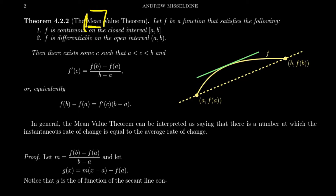That's how you should interpret this, because the mean value theorem is going to make a connection between the average rate of change and the instantaneous rate of change — the instantaneous rate of change of a function being its derivative, of course. The mean value theorem tells us the following.